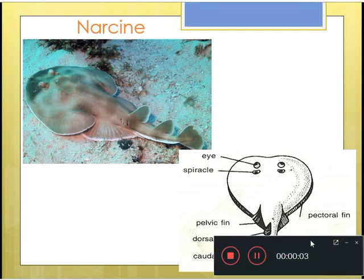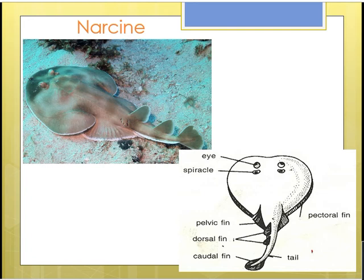Today we will discuss the important features of a fish of the genus Narcine. It comes under the phylum Chordata, subphylum Vertebrata, division Gnathostomata, superclass Pisces, and class Chondrichthyes.